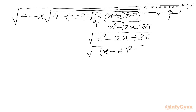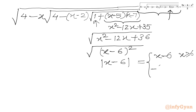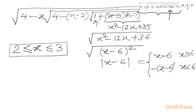The square root of a perfect square is the absolute value, so √((x-6)²) = |x - 6|. Since x lies in the interval [2, 3], x is less than 6, so we use the second case: |x - 6| = -(x - 6) = 6 - x.